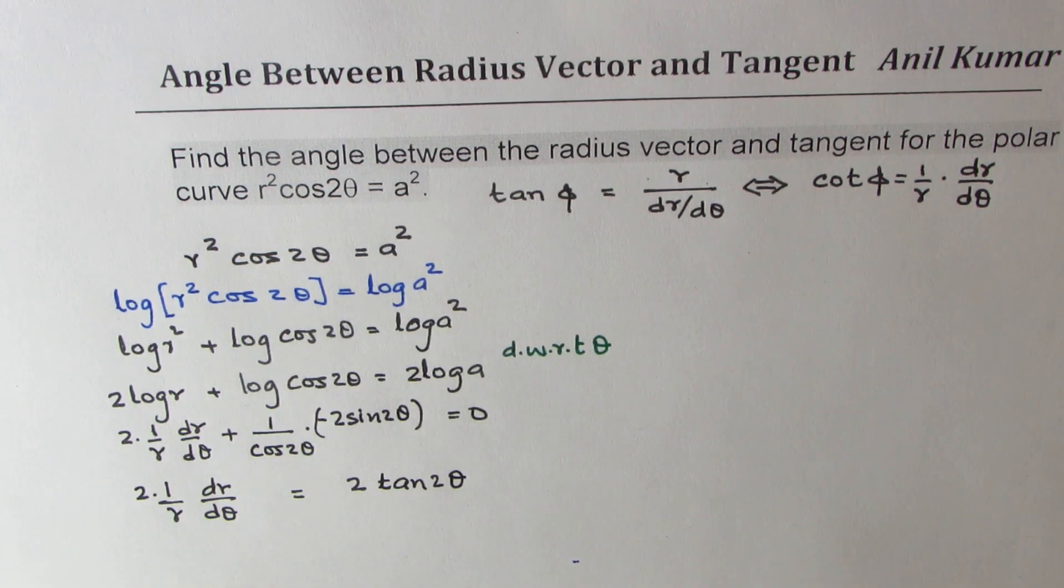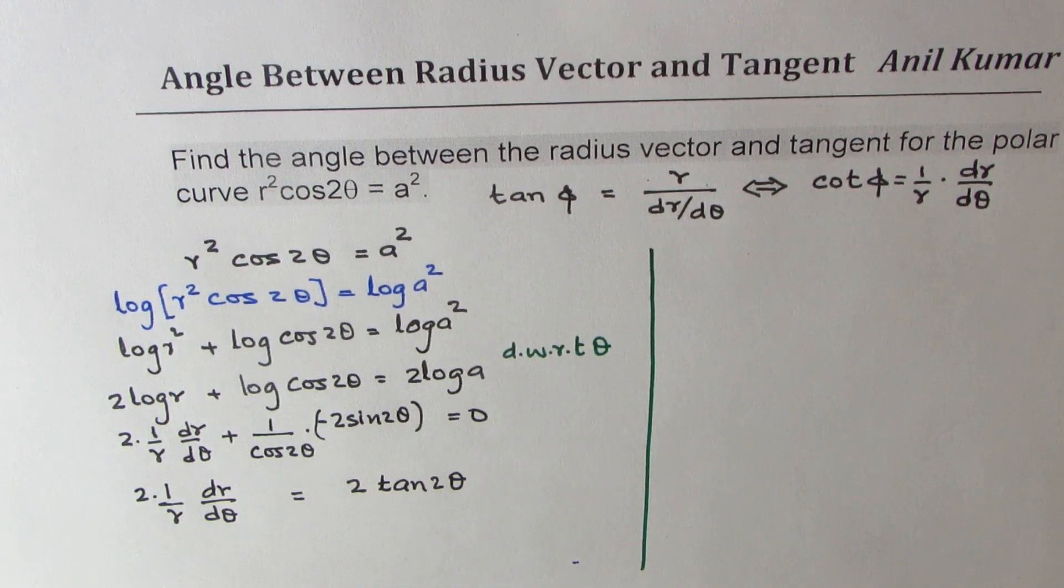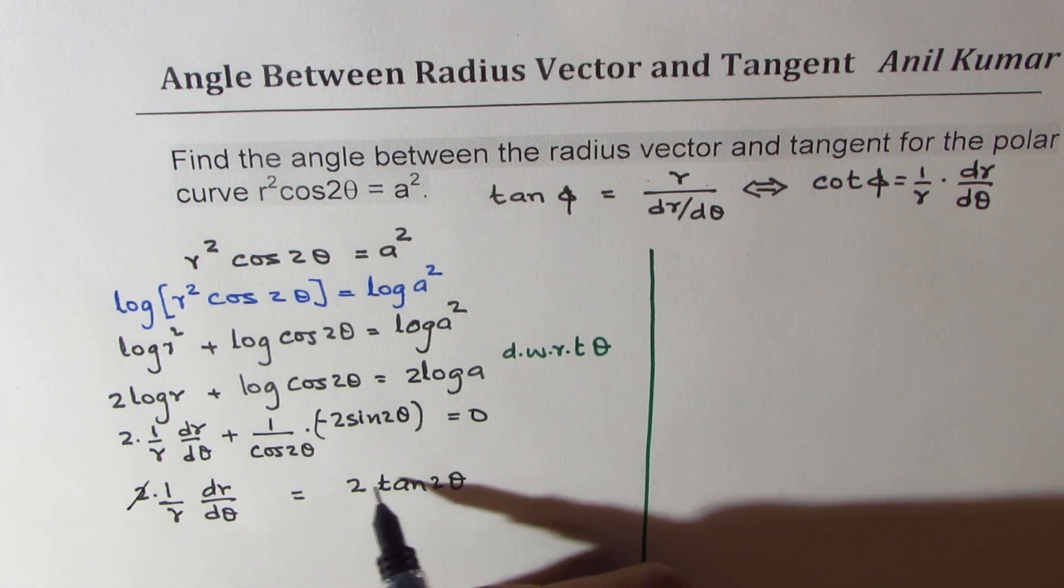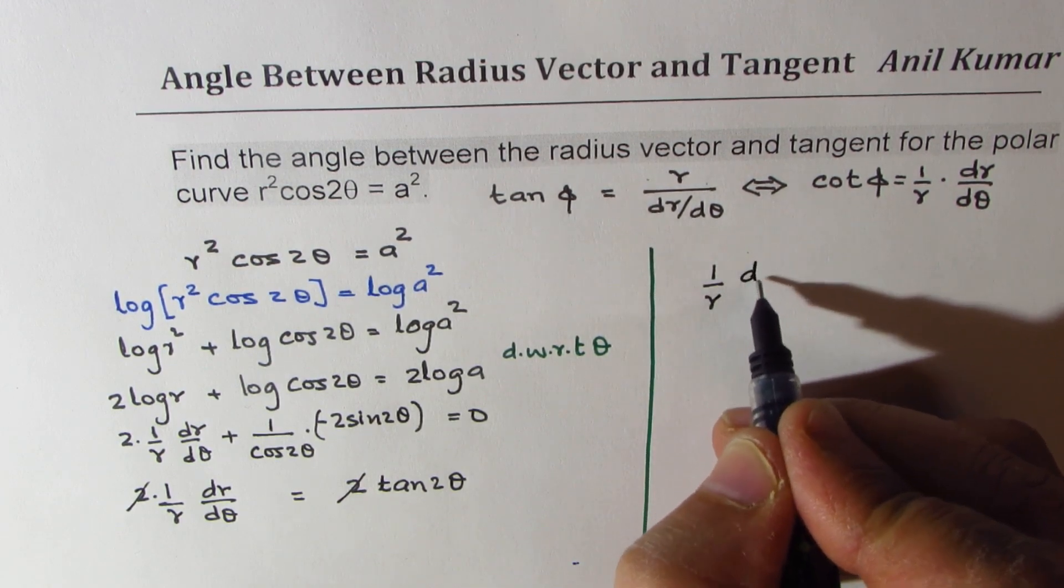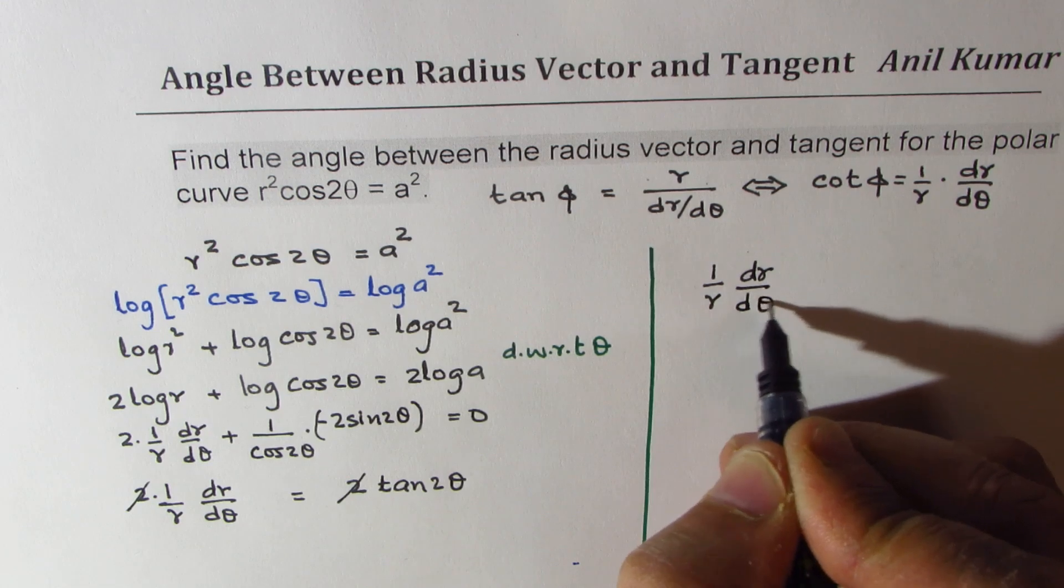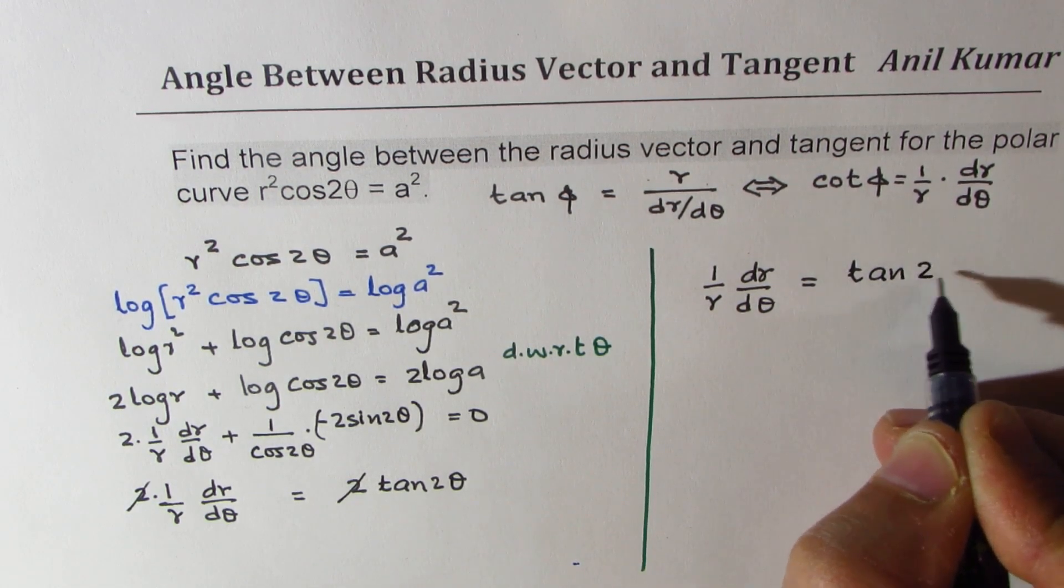So 2 and 2 can cancel. So we get 1/r dr/dθ equals tan 2θ.